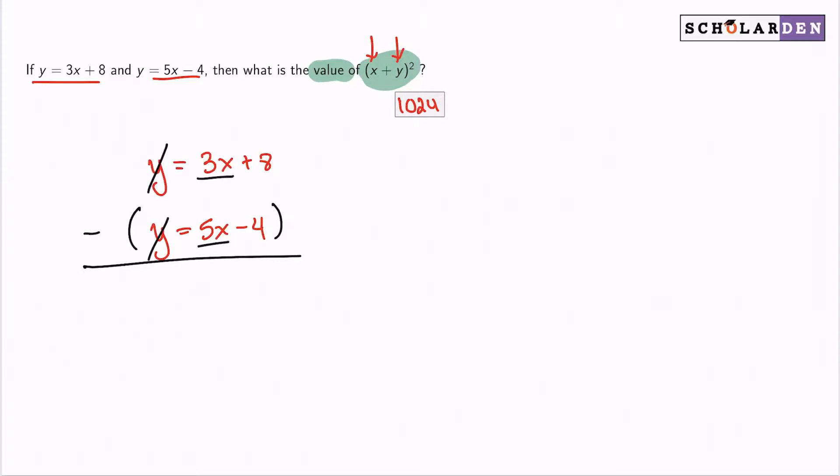3x minus 5x will give us a negative 2x. And let's be careful here because we still have the equal sign. So equals, and then when the y's canceled, that gave us zero. So hopefully that didn't concern anybody so far. And then lastly, 8 minus negative 4. Think about it. 8 minus negative 4, that is 8 plus 4. So that's 12.